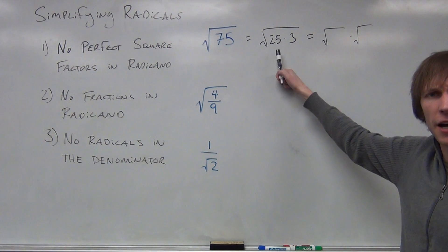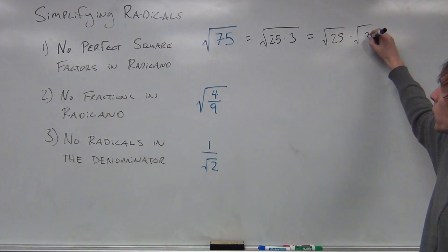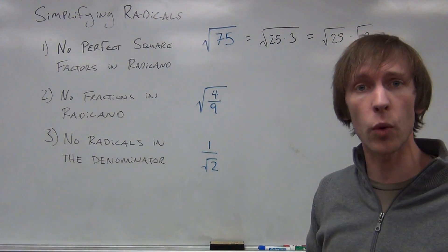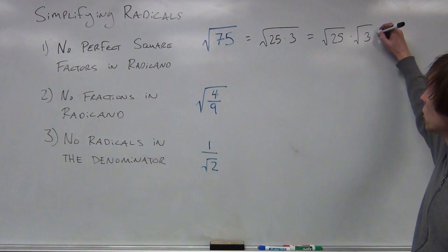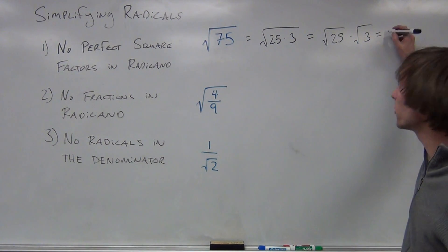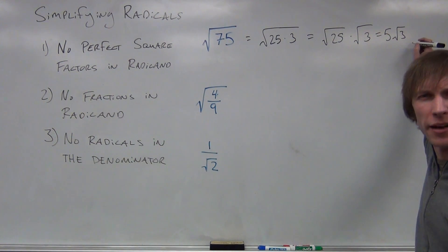So the square root of 25 times 3 is the square root of 25 times the square root of 3. This is just another way to rewrite it. Now, the square root of 25 we already said is 5, so I can simplify this further. The square root of 3, on the other hand, I can't simplify.